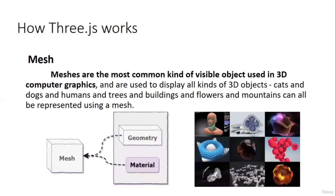Mesh consists of geometry and material. Using both of these, we can create a mesh. In upcoming lectures, we are going to learn how to use geometry and material to create a mesh. You can see in the examples that what is shown here is a mesh, created using geometry and material. The renderer uses camera and scene to process the data and display it to the screen onto an HTML canvas element.